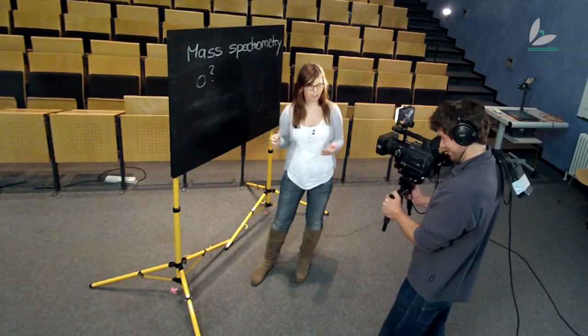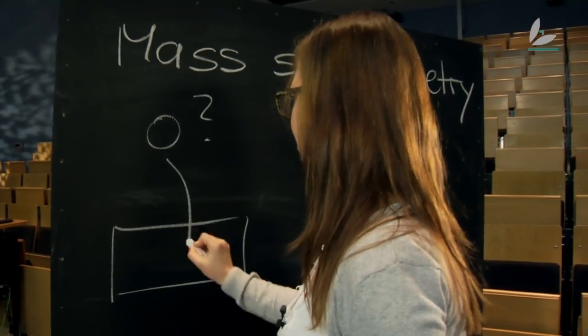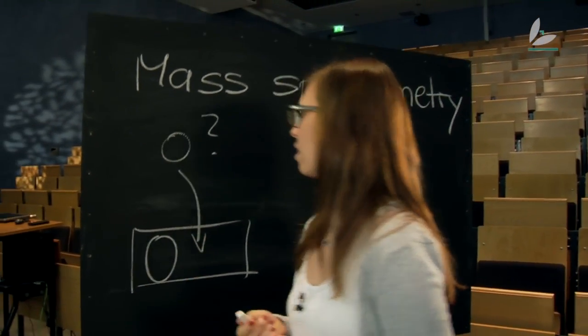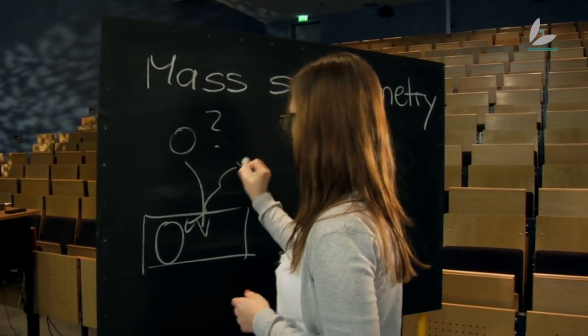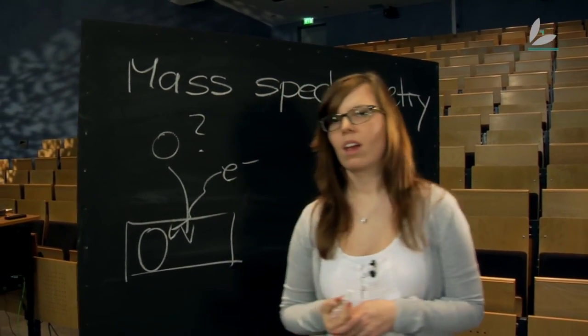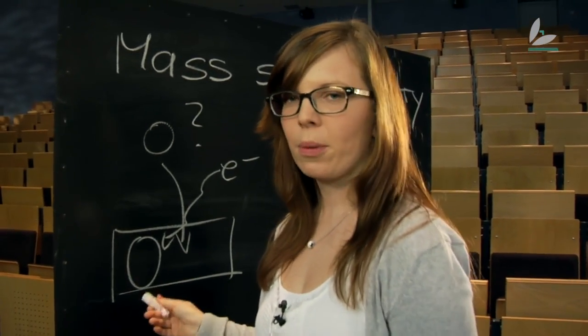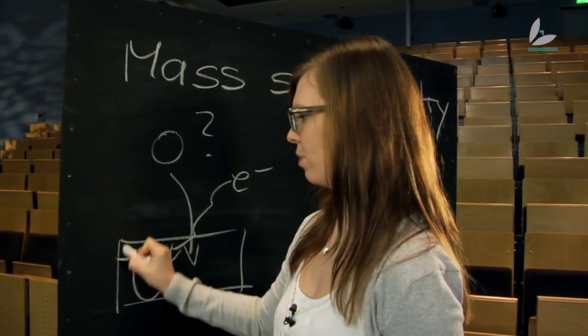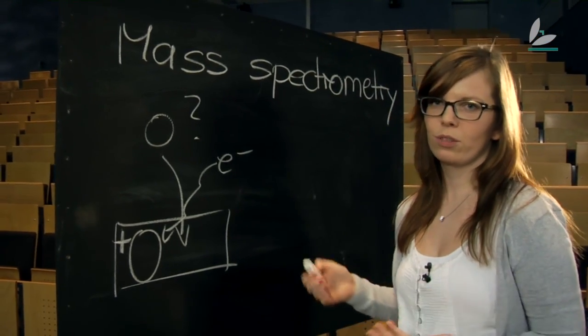For that we put the compound in a vacuum and then we shoot it with electrons. Two things happen: the compound gets a positive charge and it breaks apart into different fragments.